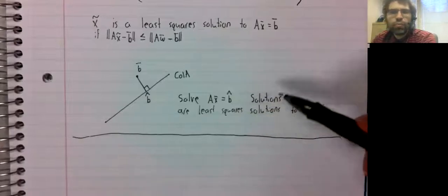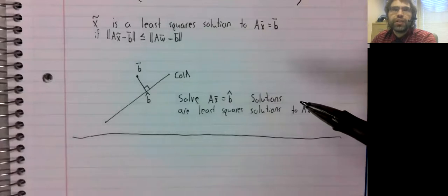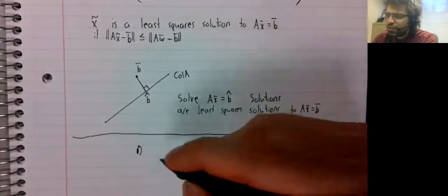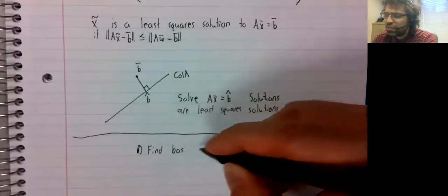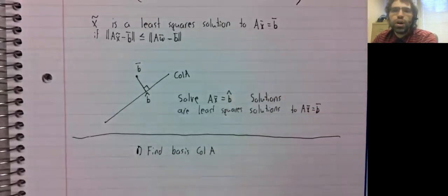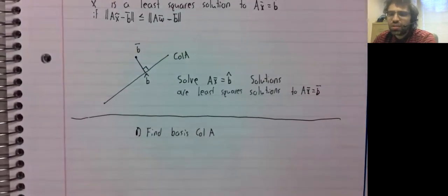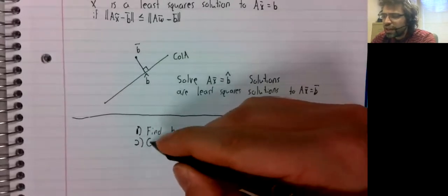Actually performing this process, though, would be rather tedious. To do the projection, we'd need a basis of the column space. Of course, the columns are a spanning set, but that doesn't make them a basis. To do the projection,